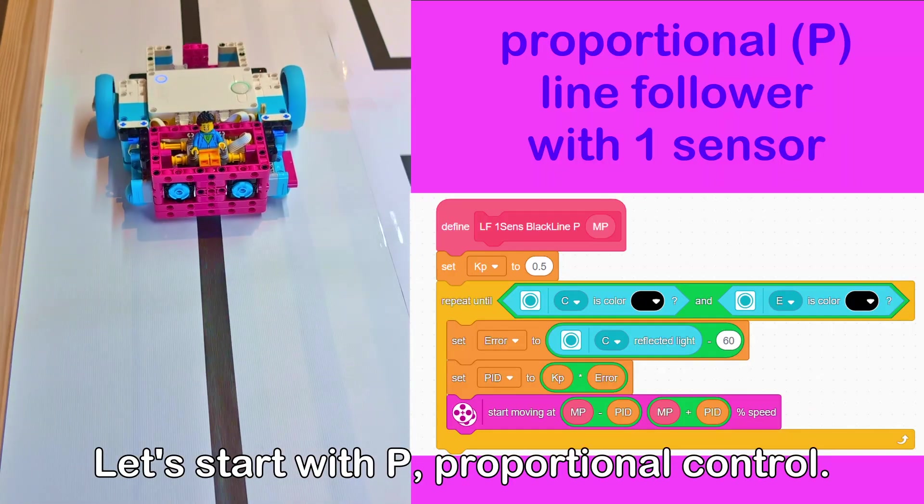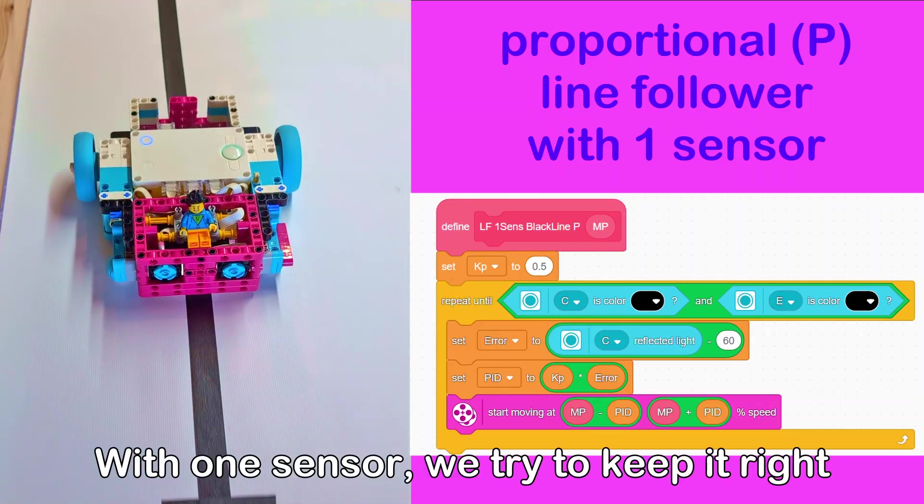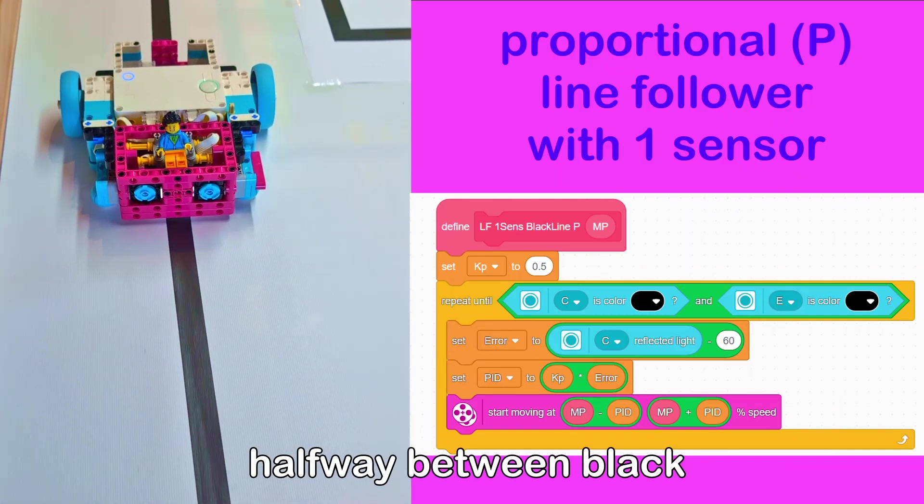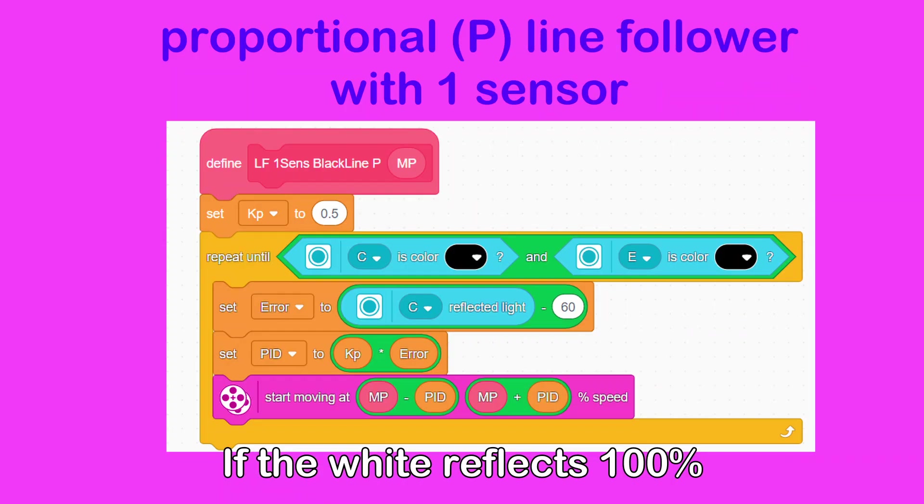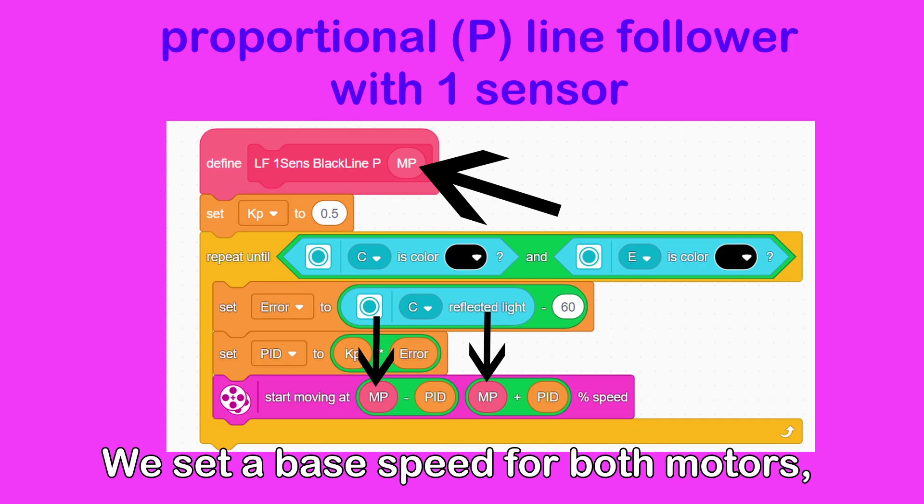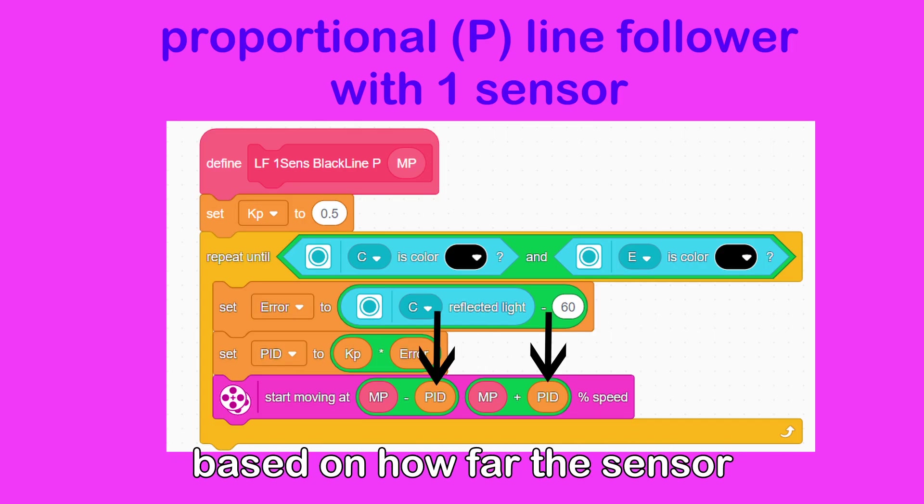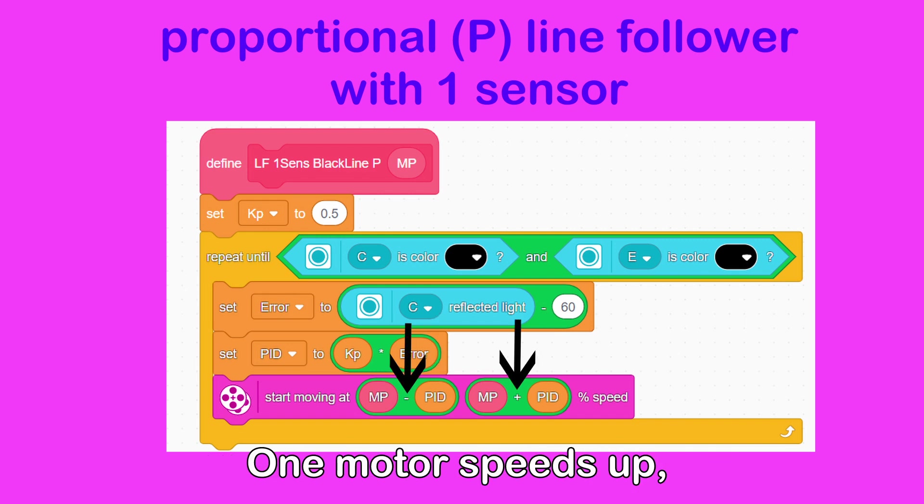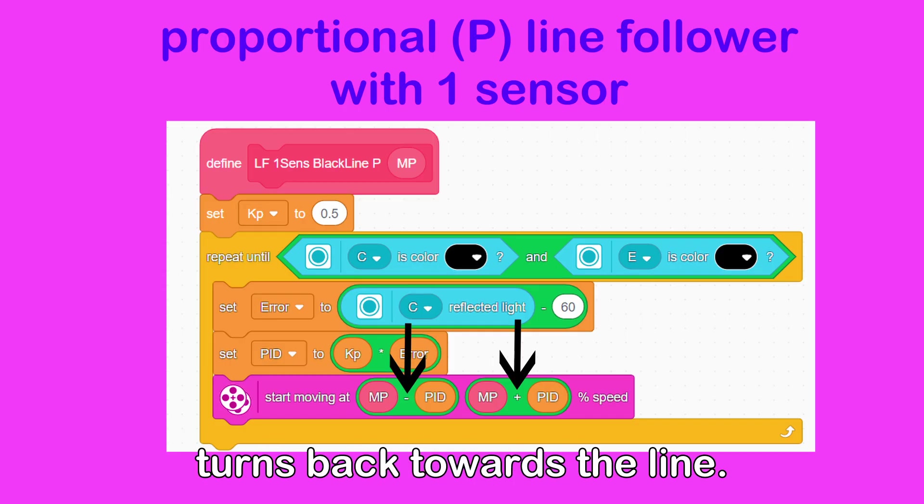Let's start with P, proportional control. With one sensor, we try to keep it right on the edge of the line, halfway between black and white. If the white reflects 100% and black 20%, our target is about 60%. We set a base speed for both motors, then adjust their speeds based on how far the sensor reading is from 60%. One motor speeds up, the other slows down, so the robot turns back towards the line.